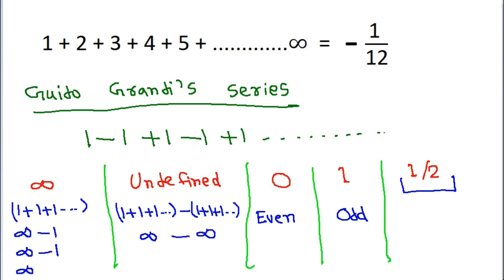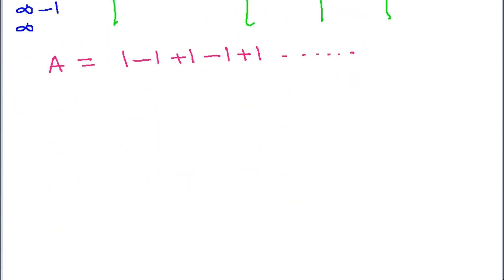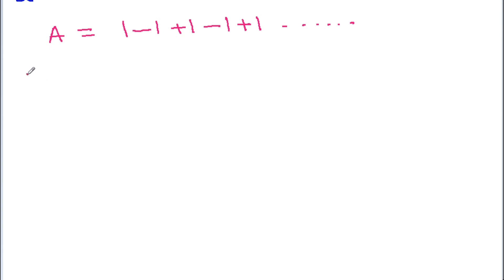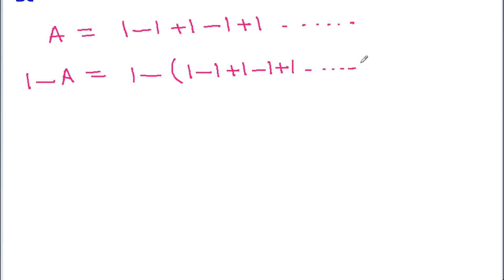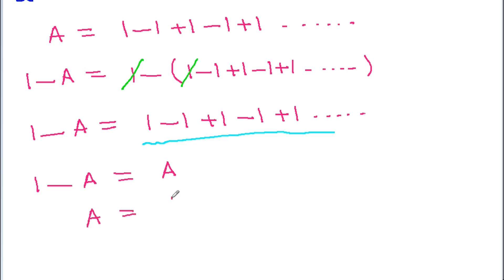Let a = 1 minus 1 plus 1 minus 1 plus 1 and so on. If we subtract a from 1, we get 1 minus a = 1 minus (1 minus 1 plus 1 minus 1 ...). The 1 and minus 1 cancel, and changing signs gives us 1 minus 1 plus 1 and so on, which is also a. So 1 minus a = a, giving 2a = 1, therefore a = 1 by 2.